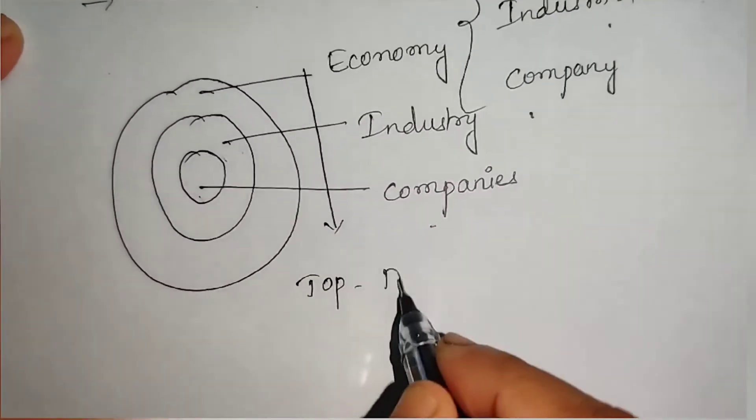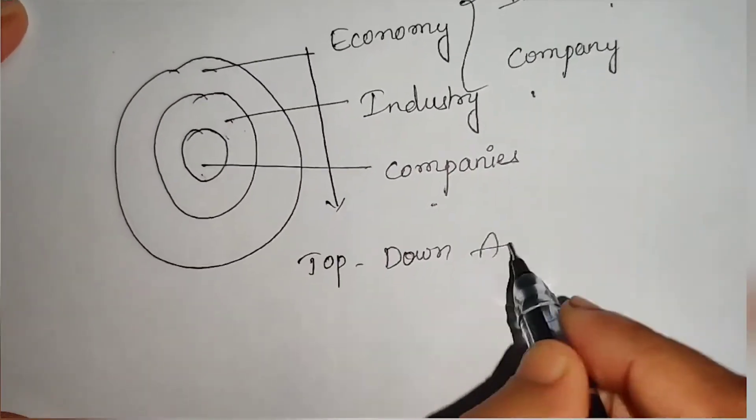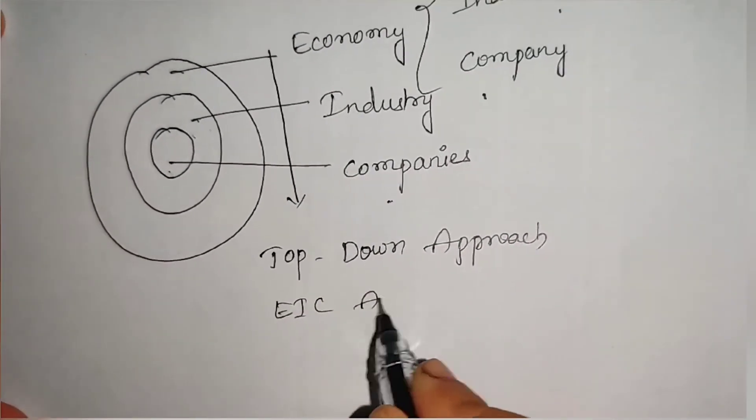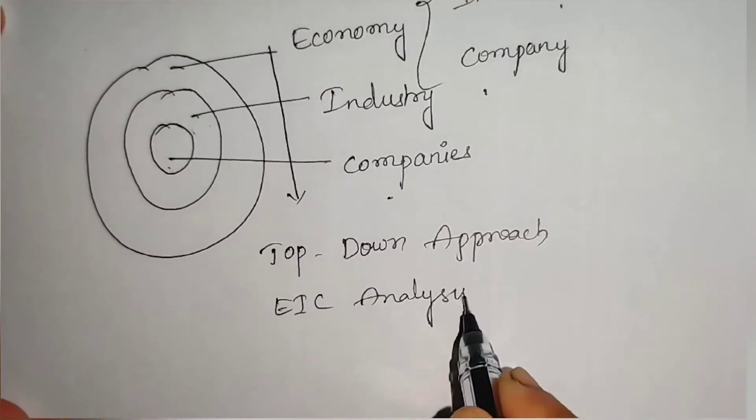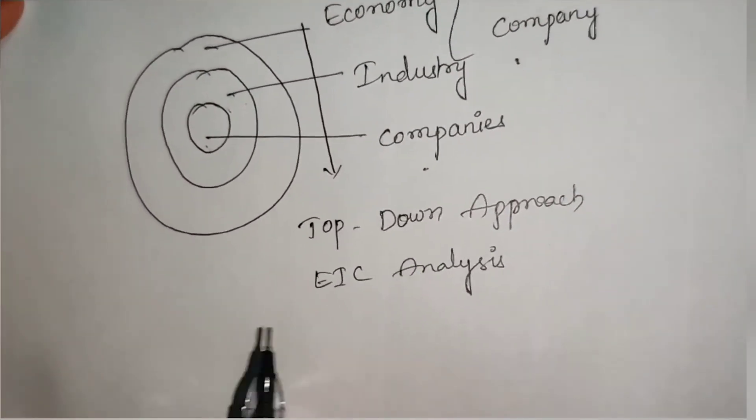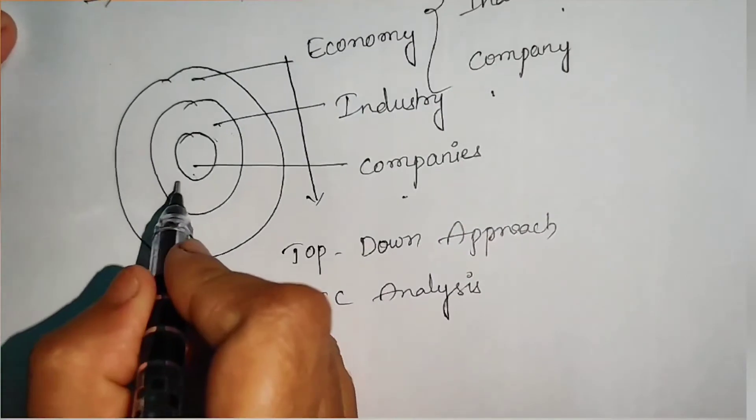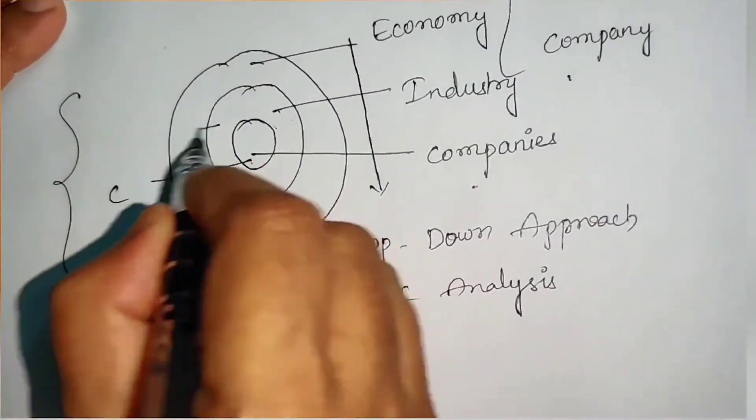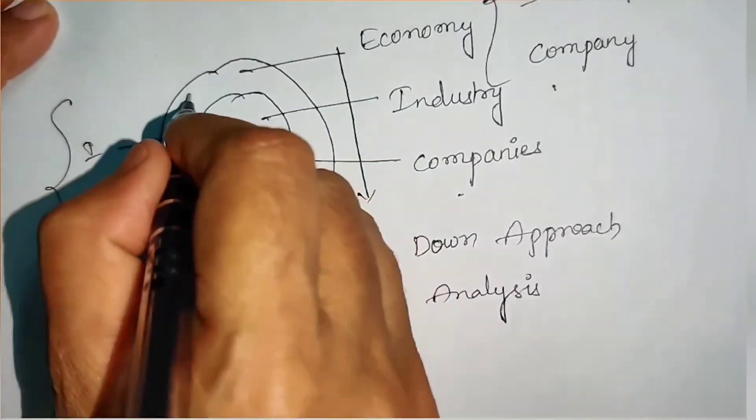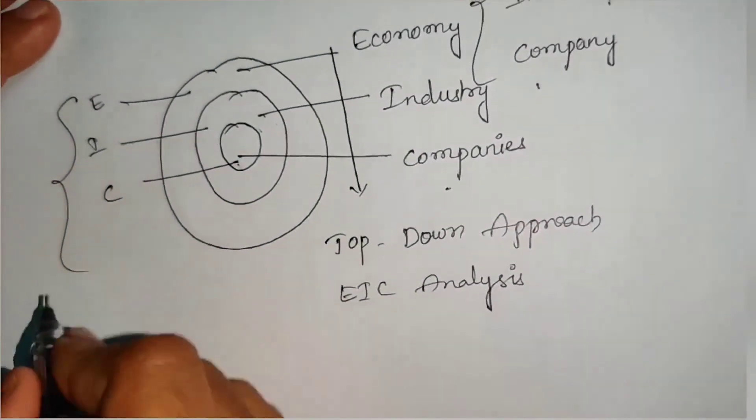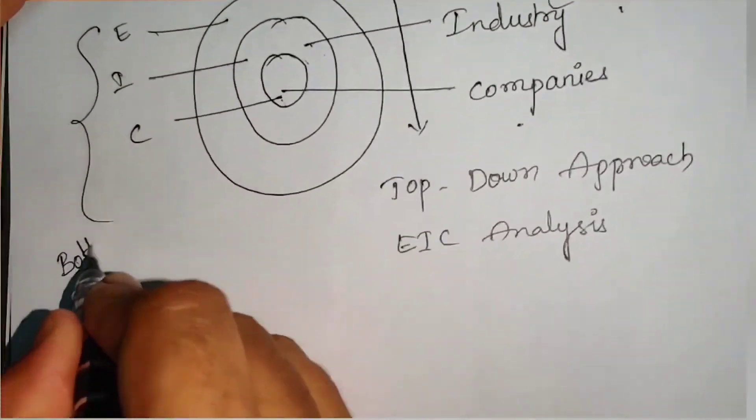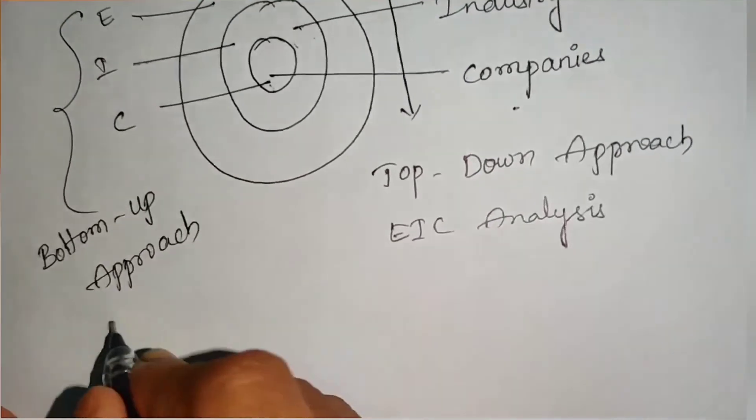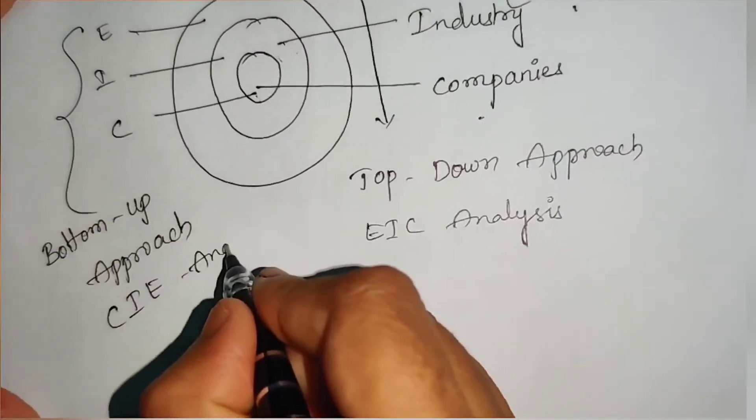If we study from economy to company, then this is called top-down approach or EIC analysis. Instead of coming from top to down, if we go from company to industry then to economy, then this is called bottom-up approach or CIE analysis.